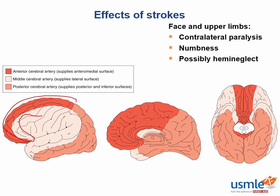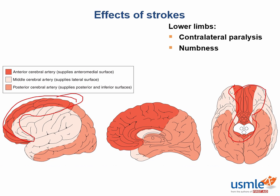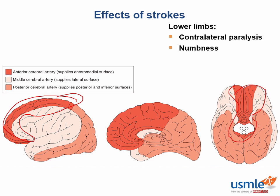The ACA is actually medial. With this, you will have effects on the motor and sensory cortices that supply the lower limb, and again you'll see contralateral paralysis and numbness.